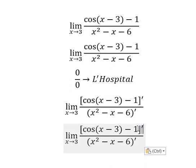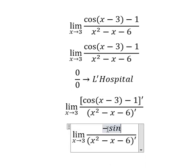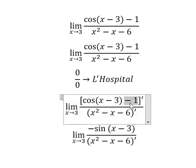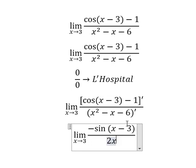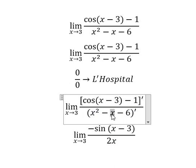The derivative of the numerator is negative sine of (x minus 3). The constant becomes zero. For the denominator, we get 2x minus 1.